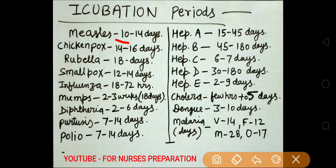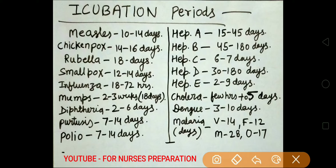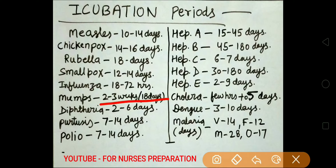Measles incubation period 10 to 14 days. Chickenpox 14 to 16 days. Rubella 18 days. Smallpox 12 to 14 days. Influenza 18 to 72 hours. Mumps 2 to 3 weeks or 18 days.